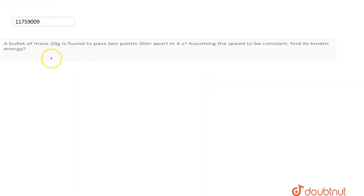The question is that we have a bullet which has 20 grams of mass. This is 0.02 kg. It covers these two points, this is A and this is B. This is 30 meter distance. This is 4 seconds. The speed is constant in question. We have to calculate the kinetic energy of this bullet.